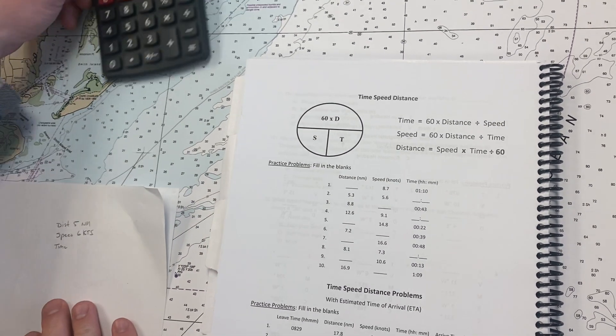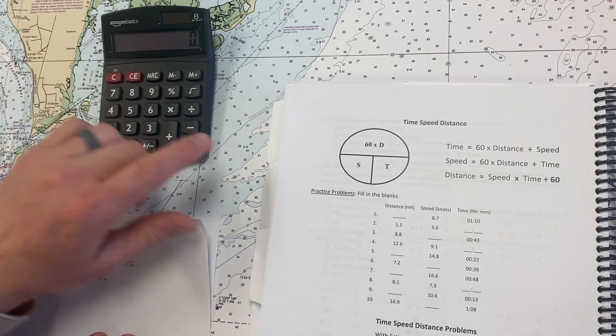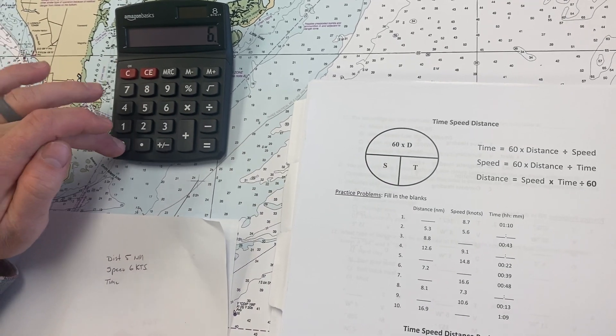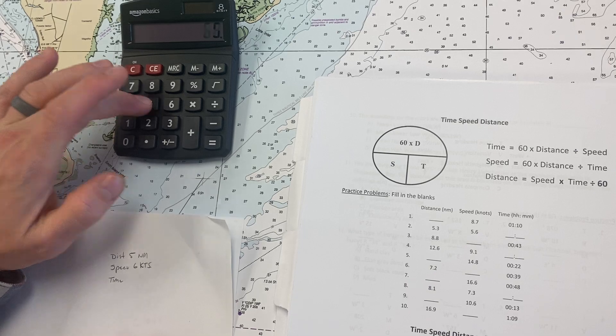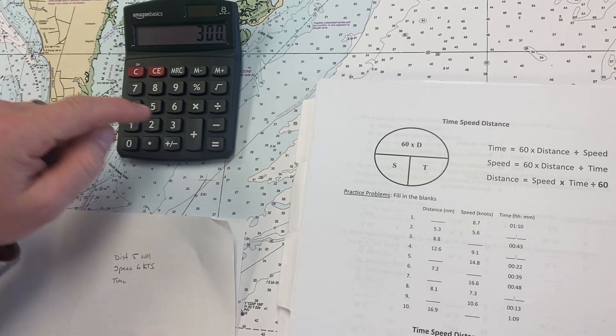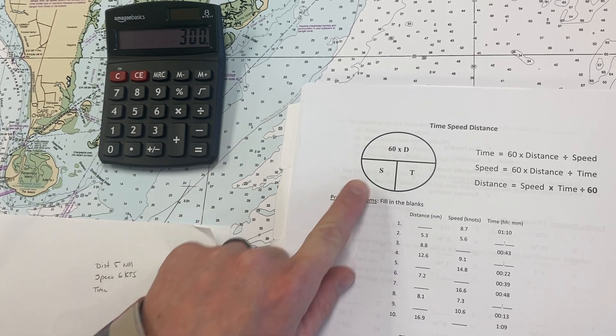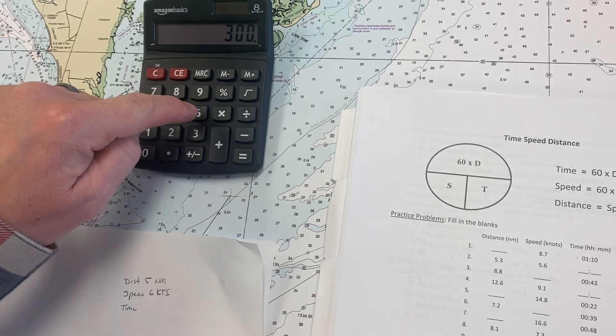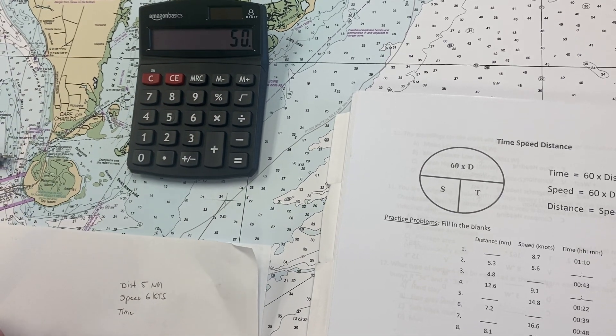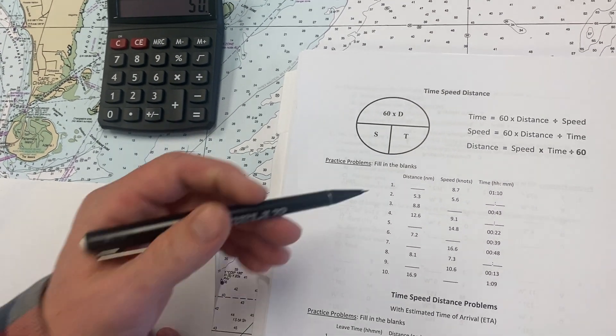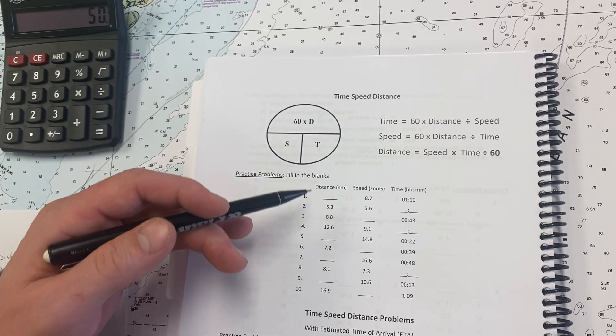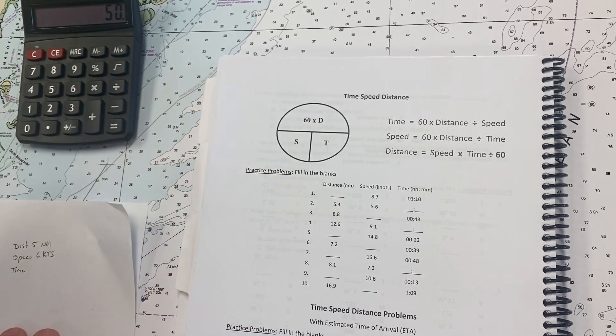So, I'm going to take our calculator here. We're going to go 60 times our distance of five nautical miles, and then we're going to divide by our speed of six nautical miles, and we get 50. That's 50 minutes. Remember, in 60 D-street, our time goes in in minutes, and it comes out in minutes.